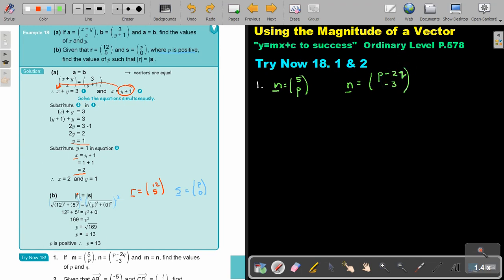So basically, what am I going to do now? I'm just going to say, because these are equal, so we set M is equal to N. I'm just going to say 5 is equal to P minus 2Q and the vertical values, P is equal to negative 3. P is equal to negative 3.